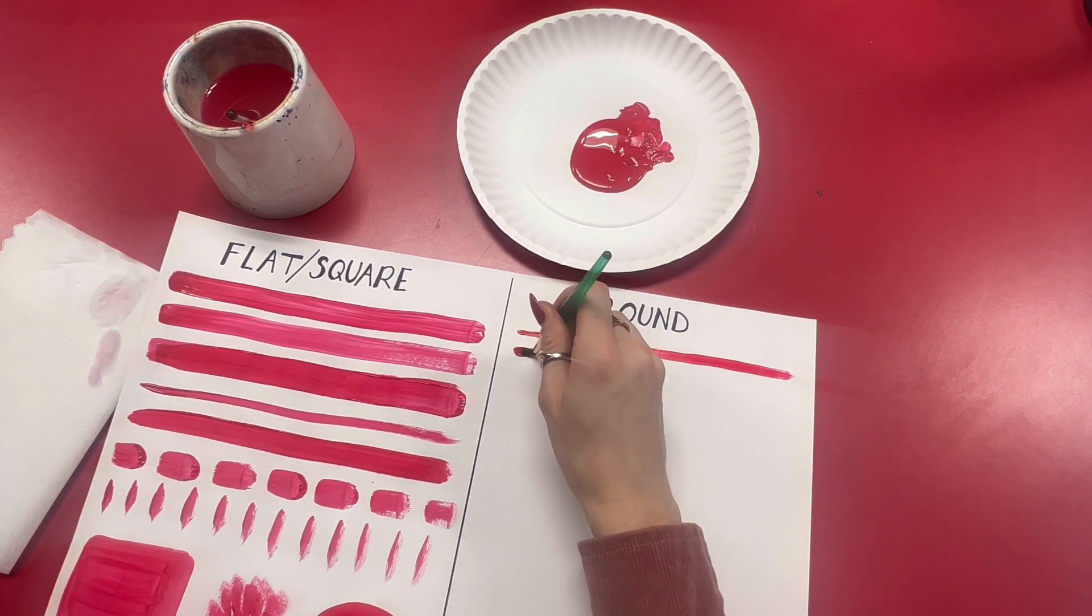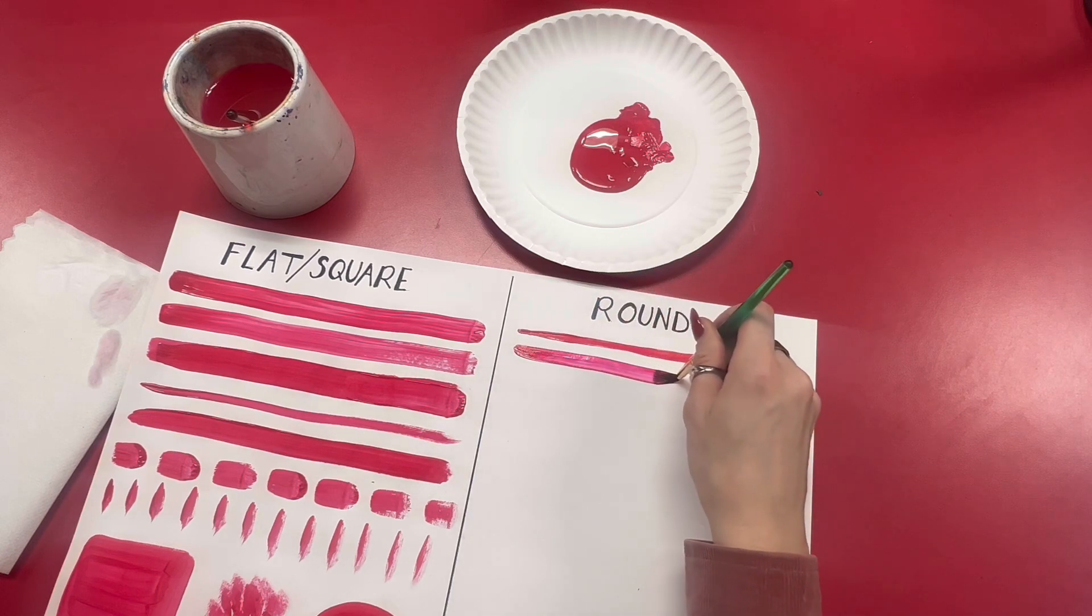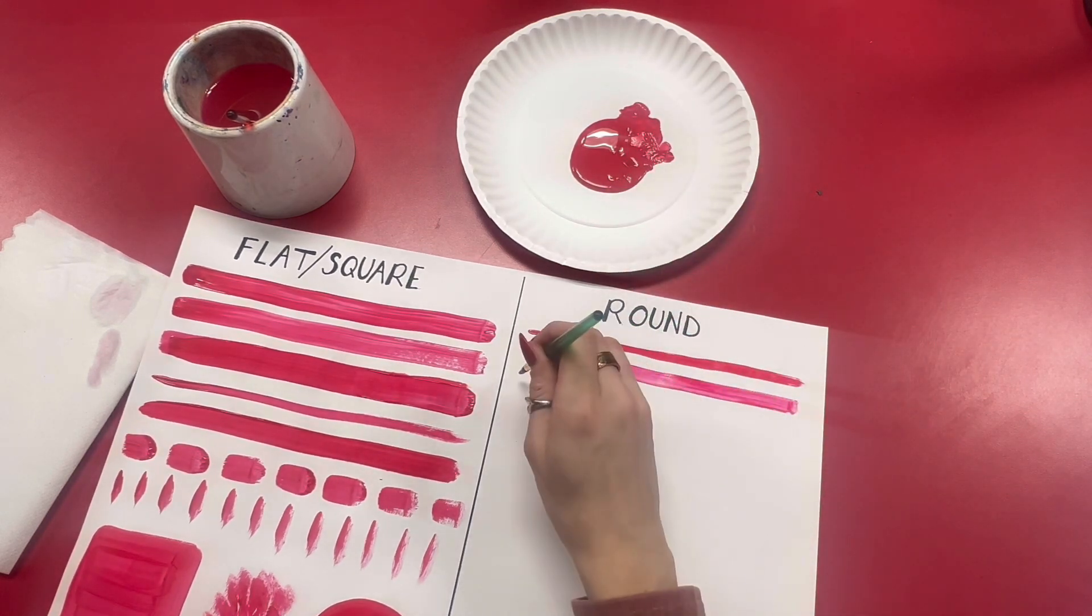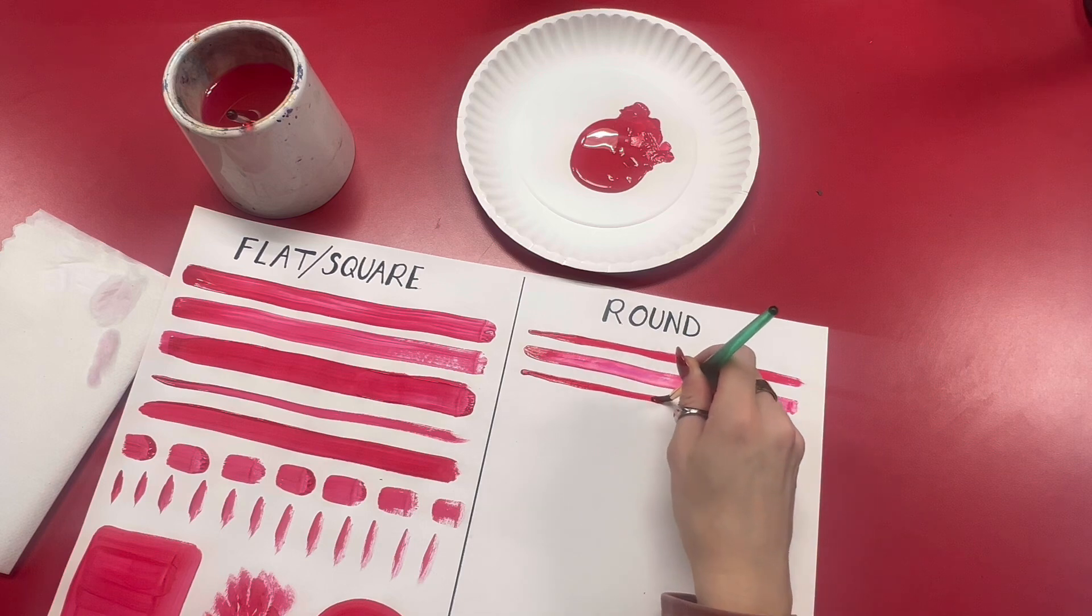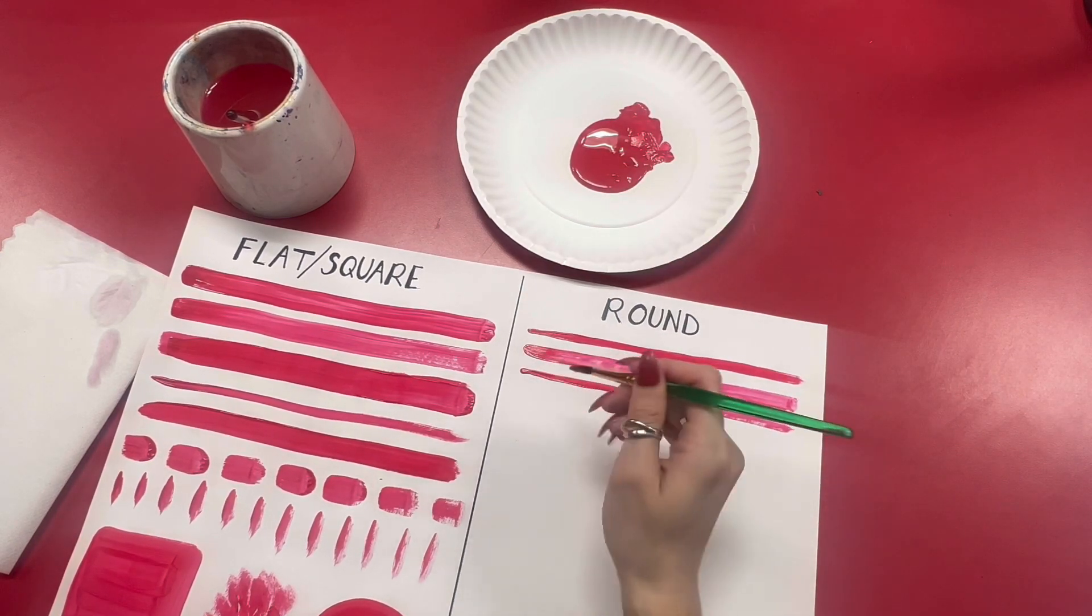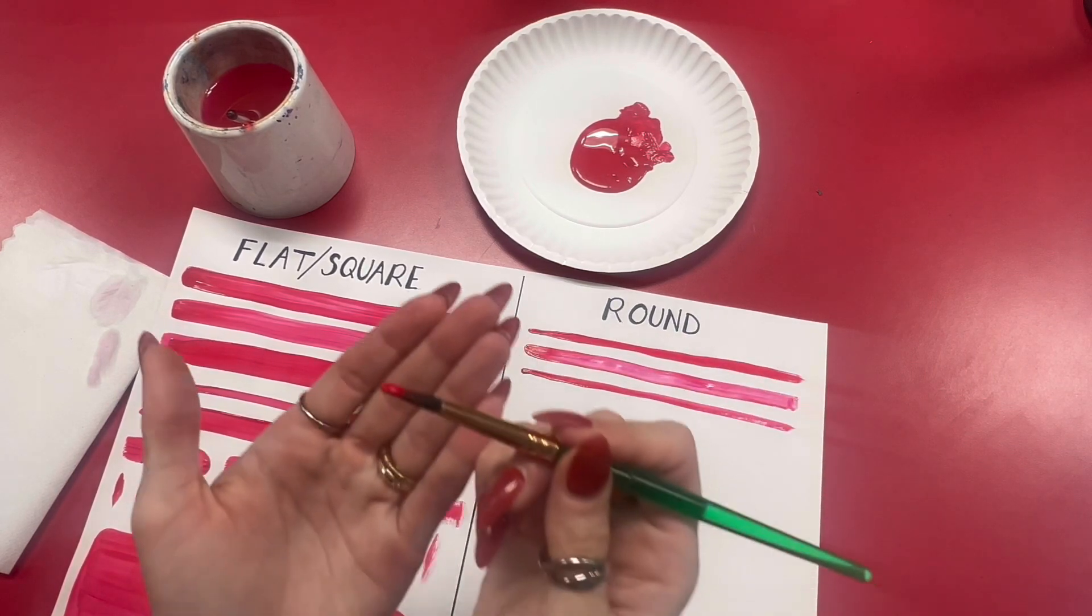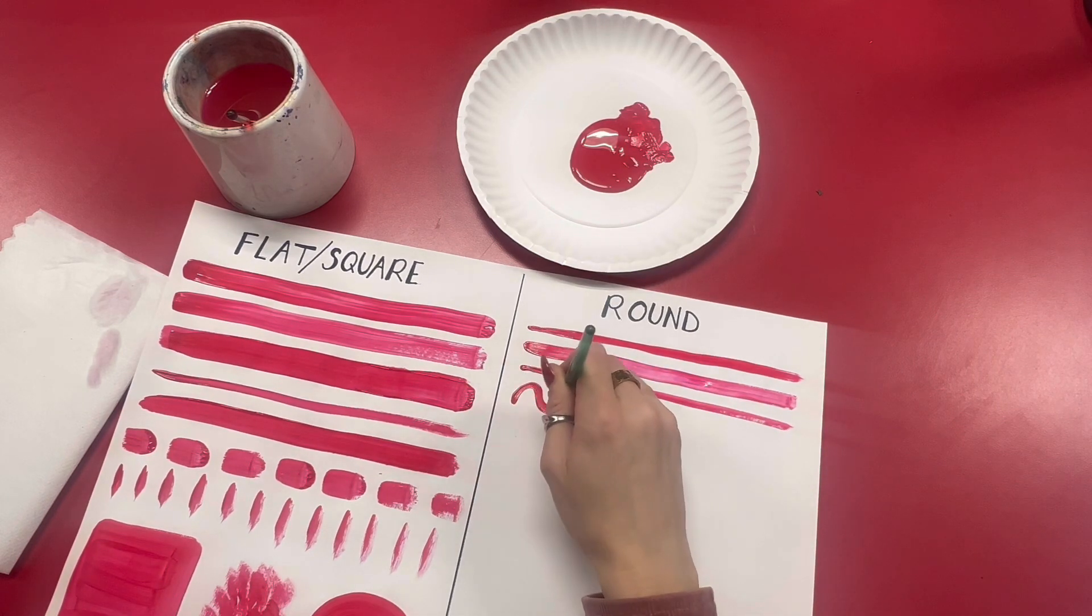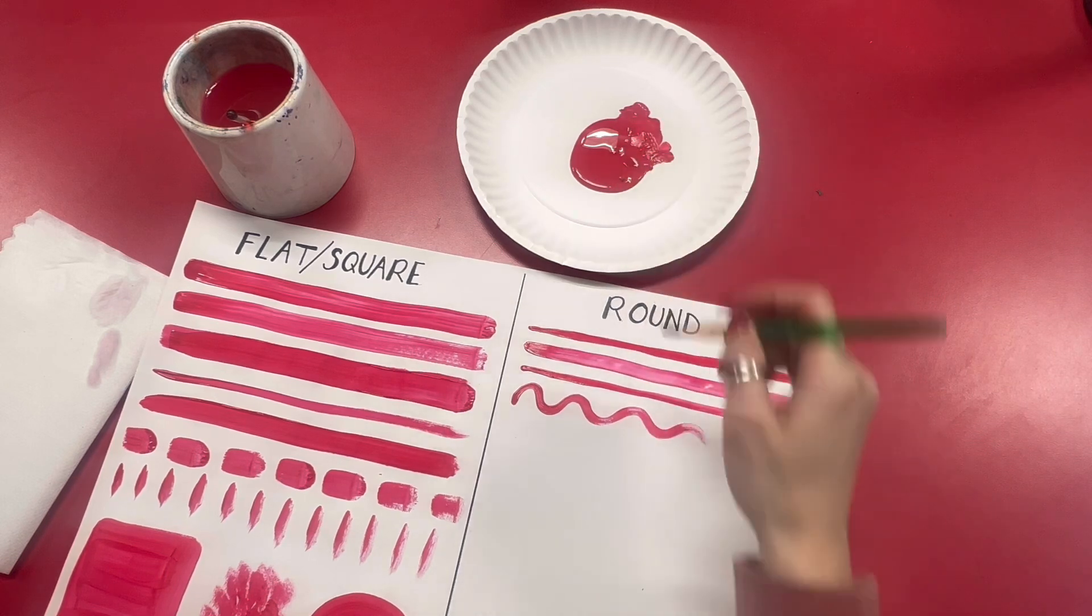If you add more pressure and press harder you're going to get a thicker line. You can see I'm pressing down with my brush a little bit more. I can make a thinner one again. And then I can practice some other lines. I can use the tip of the brush, kind of standing up on its toes a little bit to create more detailed lines.